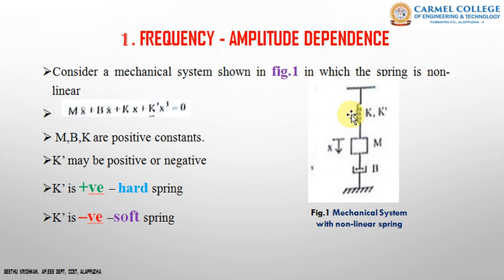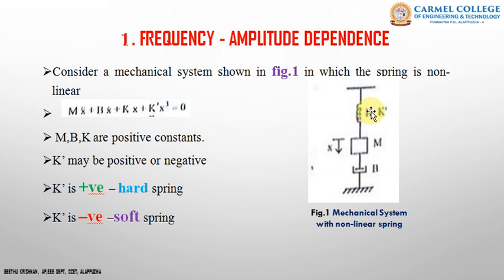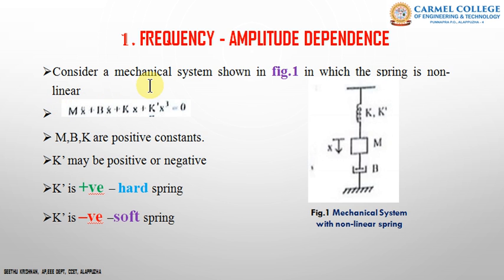Consider the force balancing equation of this nonlinear mechanical system. The equation is: m·ẍ + b·ẋ + kx + k'x³ = 0. If the spring is linear, there is no k' term, and the equation is simply m·ẍ + b·ẋ + kx = 0. But here the spring is nonlinear, so the extra term k'x³ is added.